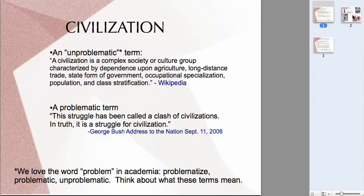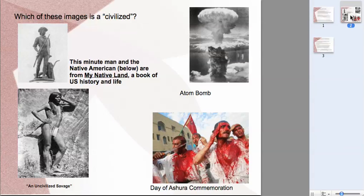On the other hand, of course, civilization — to say somebody is civilized — is a very complex and problematic term. Just to give you an example of that: George Bush described what he calls the War on Terror as not a clash of civilizations, but a struggle for civilization. So what does he mean when he says that? Let's take a look at a couple of images here and hopefully these images will get us to begin to think critically about that term civilization.